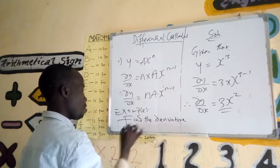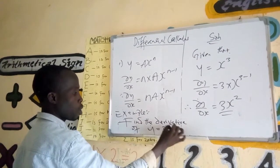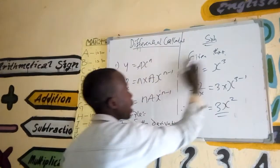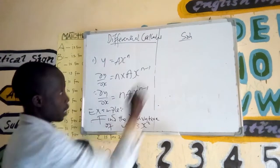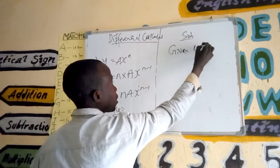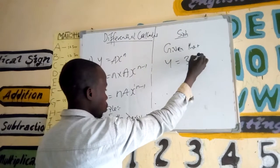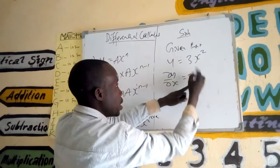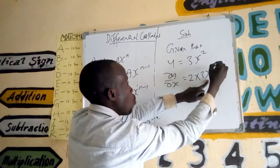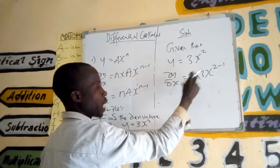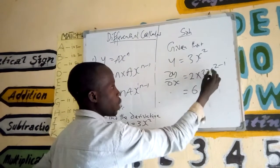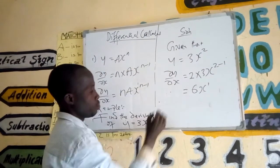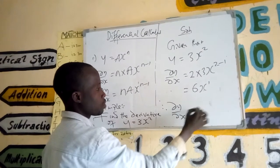The derivative of y equals 3x squared. Using the same process, given that y equals 3x squared, dy by dx equals — the 2 comes down and multiplies by the constant 3 — x to the power 2 minus 1. This is the same as 2 times 3 which is 6, then x to the power 2 minus 1 is just x to the power 1. Therefore dy by dx equals 6x.